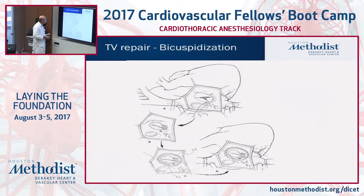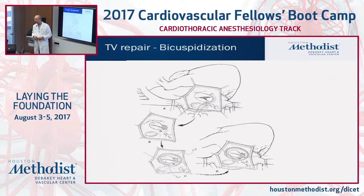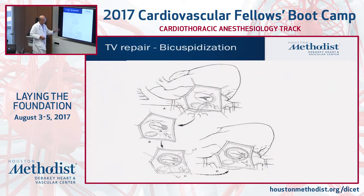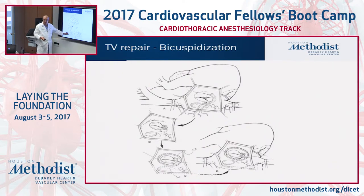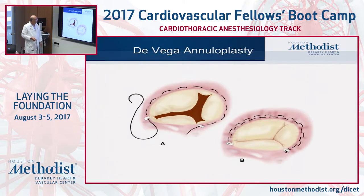An example of tricuspid repair is the bicuspidization procedure, or Kay annuloplasty, described by Jerome Kay in 1976 from LA. You eliminate the posterior leaflet, essentially creating a bicuspid valve from the tricuspid valve, achieving annular reduction and improving coaptation between the leaflets. The same principle is applied analogously to mitral valve repair with a Kay plication. Another type of annuloplasty is the de Vega annuloplasty.